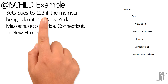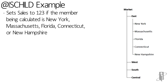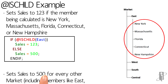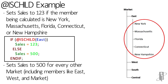So let's say we wanted to set sales equal to 123 if we were on a child of east. We don't want to hard code this list because we could be adding new states, and no one can ever figure out how to spell Massachusetts. So instead, we'll say if isChild of east, set sales equal to 123, otherwise set sales equal to 500. Now if we change the spelling of a state, or let's say Puerto Rico becomes a state and we add it to the east, this function will pick it up.